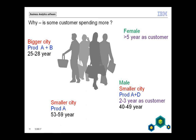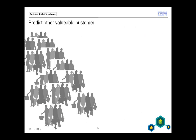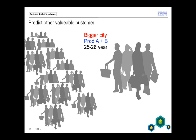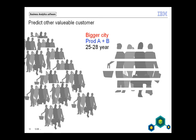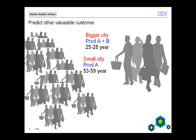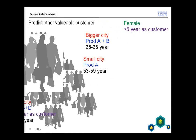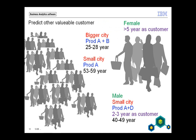They found out this information on a test sample, and then they use it on the rest of the customer base. That's predictive analytics. Pretend that this is the new customers — wouldn't it be smart to just do marketing to the group that has a high chance to answer a campaign, like people living in bigger cities, products A and B, 25 to 28 years old, or the female group, or the more complex group? That's the last step, and that is where we can find more profit and save costs.